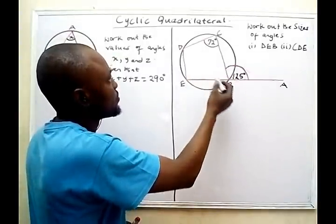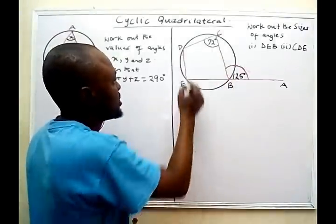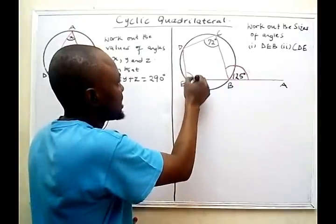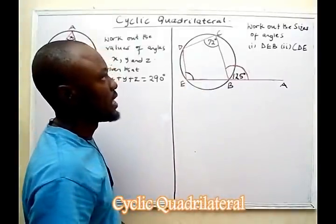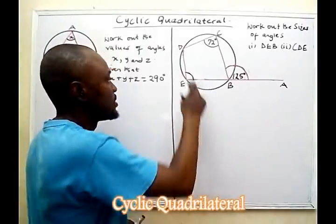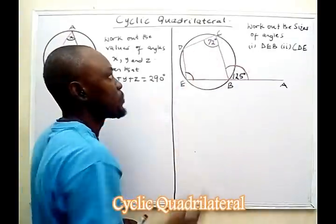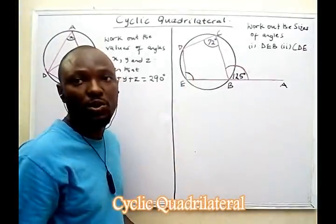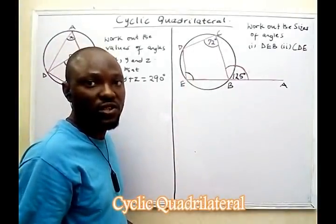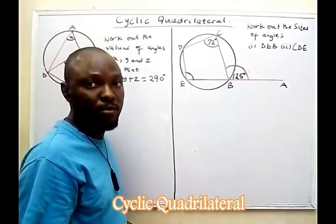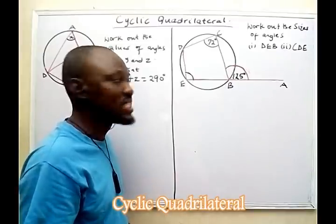Now we're given this angle, so it's easier to find the opposite angle. Why? Because the theorem states that the sum of opposite angles of a cyclic quadrilateral is supplementary — in other words, it adds up to 180 degrees.